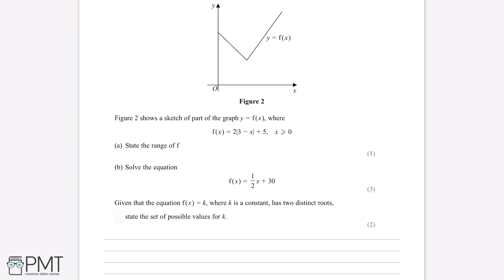We can see that the lowest y-coordinate on this graph is at the minimum point, and therefore the range must be whatever this value is and upwards, because y can take any value that is that number or greater. All we need to do is figure out what this minimum value is.